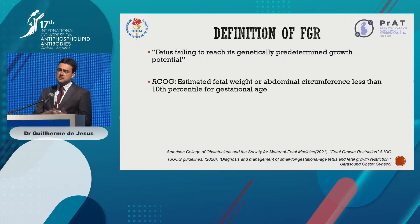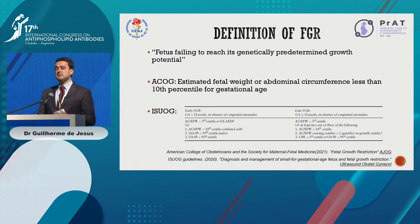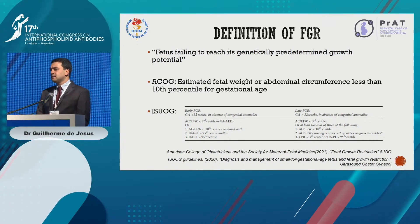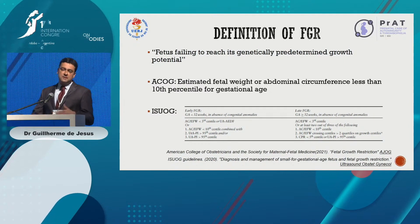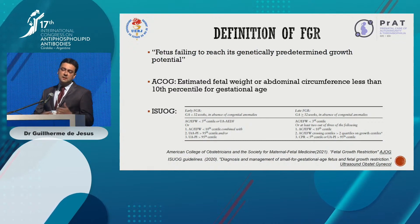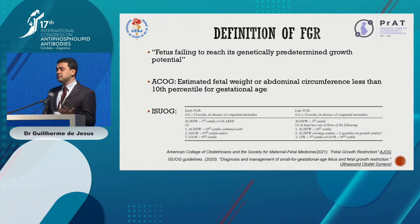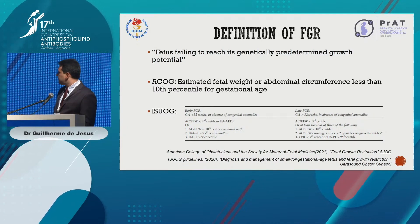With this broad definition, we can include a lot of babies that are not actually sick. The International Society for Ultrasound in Obstetrics and Gynecology has more specific criteria, differentiating between early and late fetal growth restriction, using the third percentile or the 10th percentile with Doppler abnormalities. With more specific criteria, we may miss some sick babies. So we risk either labeling normal babies as sick or missing truly sick ones — that's an ongoing problem in the obstetric field.